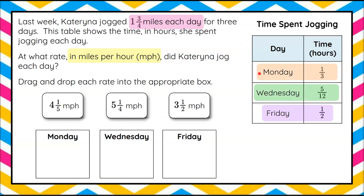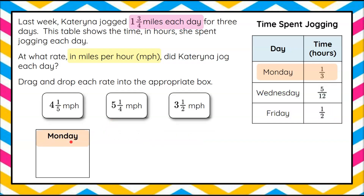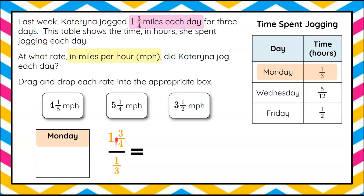Let's start with Monday. We want to know miles per hour. We know the miles was one and three-fourths miles each day — we're told that in the problem. For the time, we know it took her one-third of an hour to go one and three-fourths miles on Monday. So we bring that one-third here. Now we have a complex fraction because one or more parts of our ratio is a fraction.